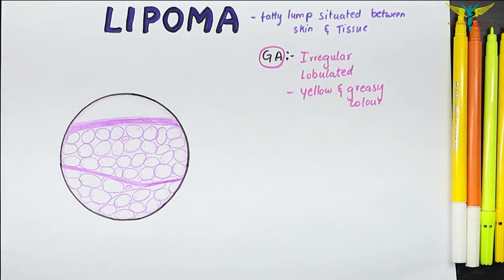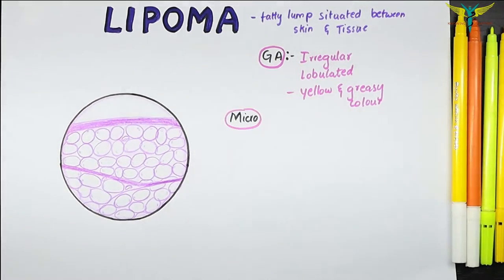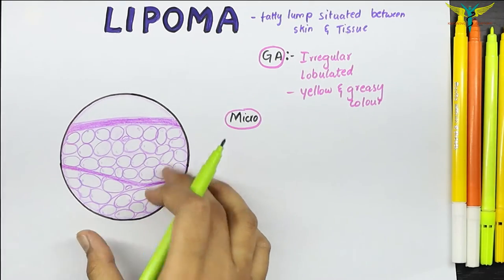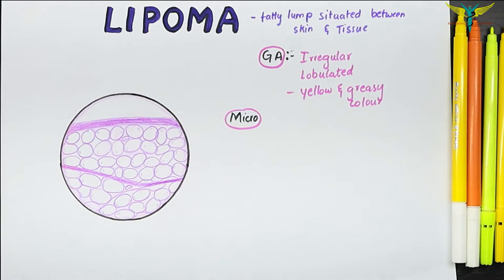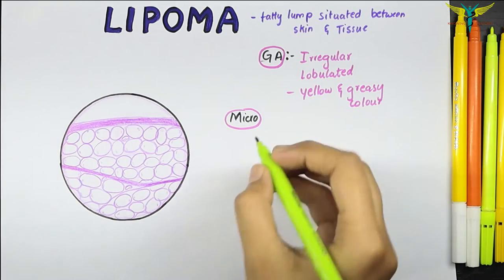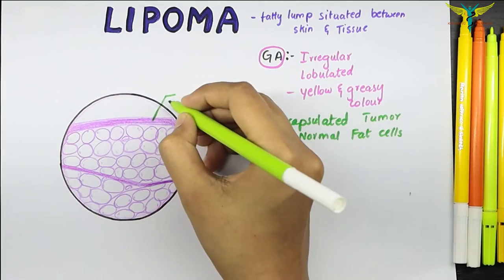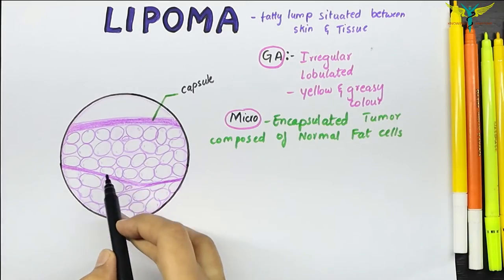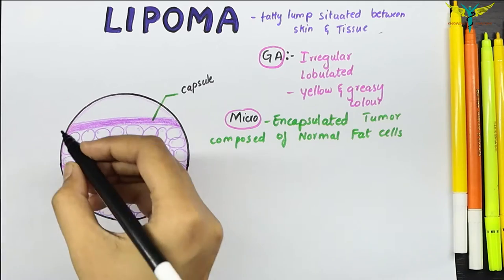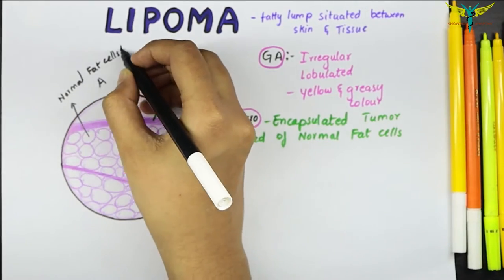Moving on to microscopy: the lipoma is an encapsulated tumor composed of normal fat cells. In this diagram, you can identify the capsule surrounding the tumor, and within it, the normal fat cells — the adipocytes.